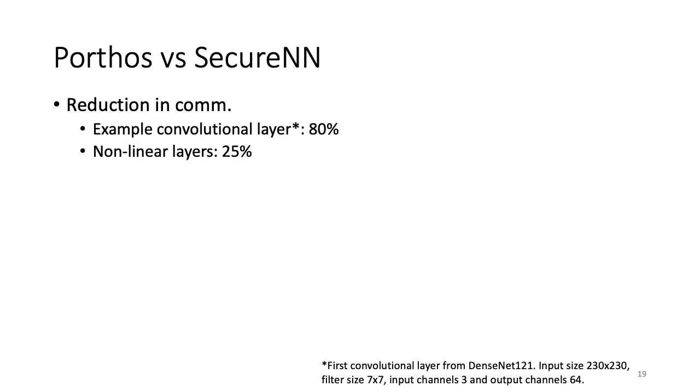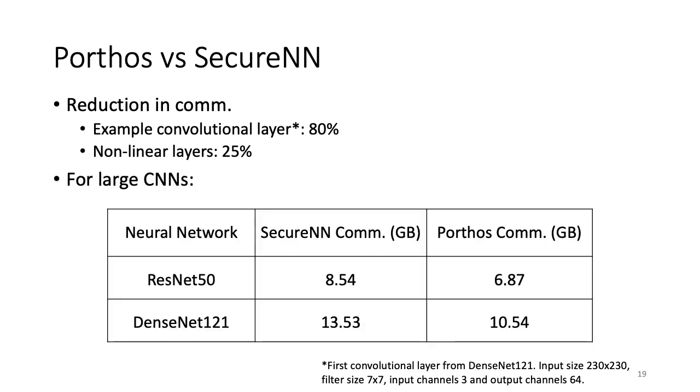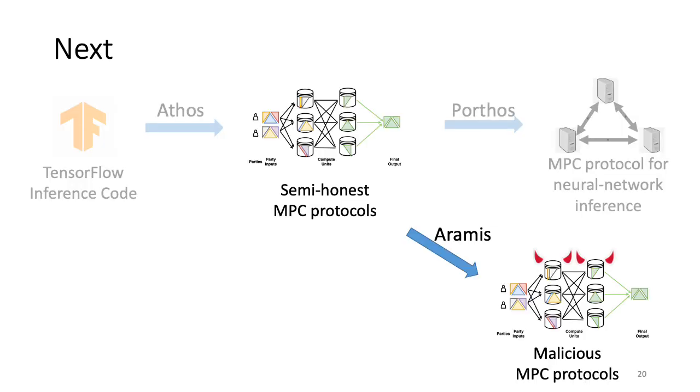With Porthos, we reduce the communication of both linear and non-linear layers compared to SecureNN. For convolution layers, we get a reduction in communication of as much as 80% for the example convolution layer from DenseNet121. This layer takes as input a 230x230x3 image and performs convolution with a filter of 7x7 with 64 output channels. For non-linear layers, we observe 25% lesser communication in Porthos over SecureNN protocols. To see how these reductions concretely translate for large CNNs, let's look at the table. To furnish the SecureNN numbers for these two DNNs along with Porthos, we also plugged in SecureNN backend to LLIL in Athos. The table clearly shows that Porthos has 20-25% lesser communication compared to SecureNN for benchmarks like ResNet-50 and DenseNet-121.